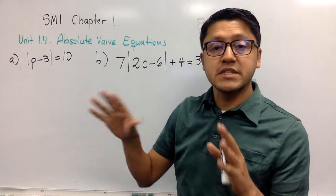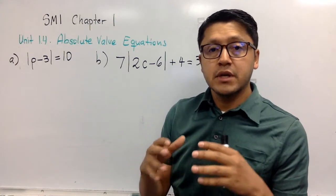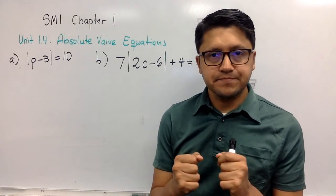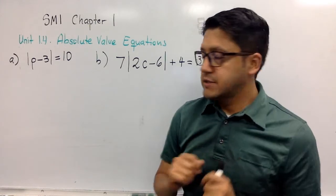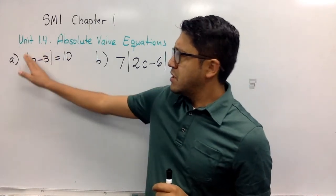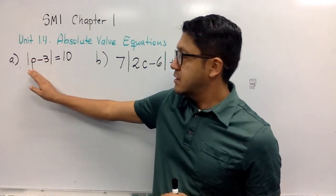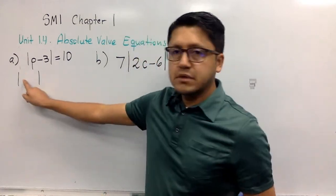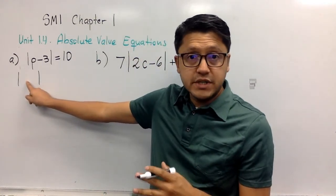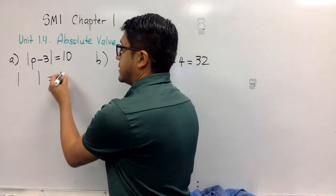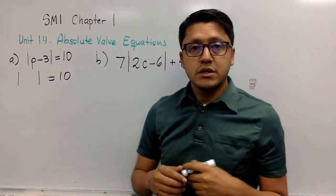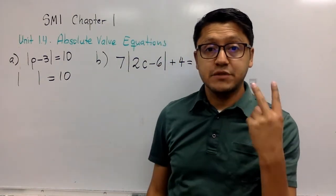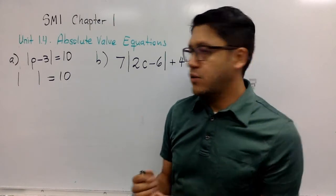Remember this: no matter what's inside, if the absolute value of something is 10, whatever is inside has to be 10. Remember, in this case, since we have a positive number, we have two possibilities.